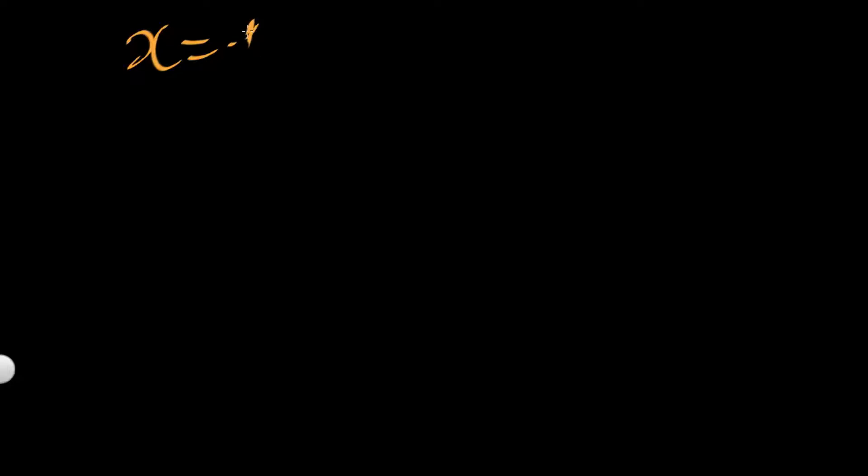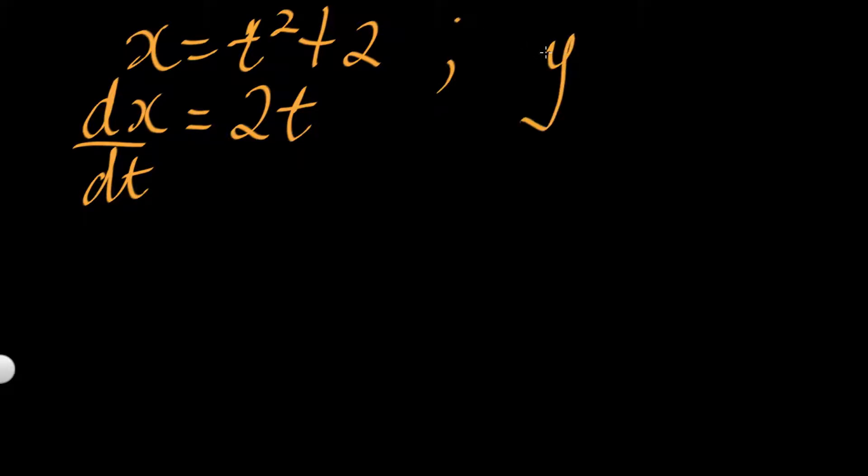So let's apply our formula. In our case we start with x is equal to t² + 2. It means we can find dx/dt. Our dx/dt will be 2t. In a similar manner we have y is equal to 4t. It means we can find dy/dt which is equal to 4.